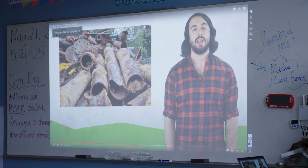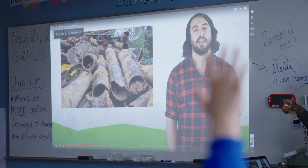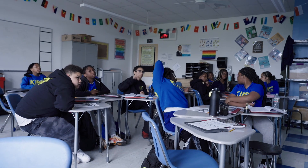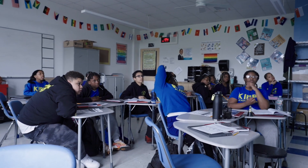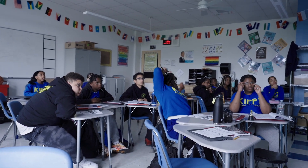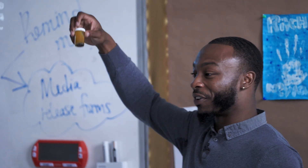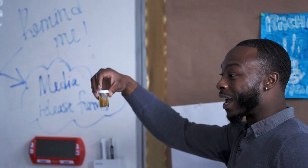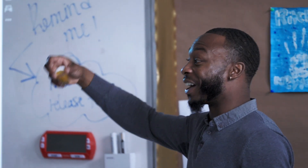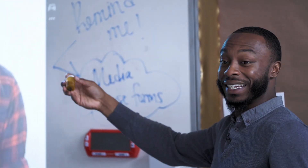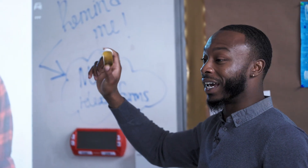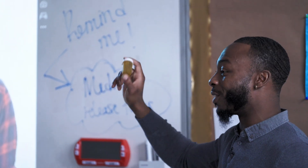Rusty pipes — what does that remind us of, sixth grade? Raising those silent hands. Jahari, what does that remind us of? How the rust formed in Westfield. Excellent — reminding us of that anchoring phenomenon. And we also investigated how that rust did form. Raising a silent hand: how did that rust get into the pipes of Westfield? By how the water was transferring through the pipes into people's homes.